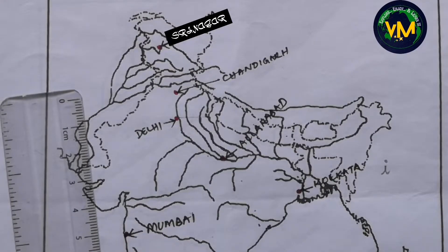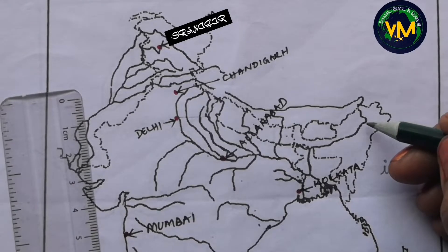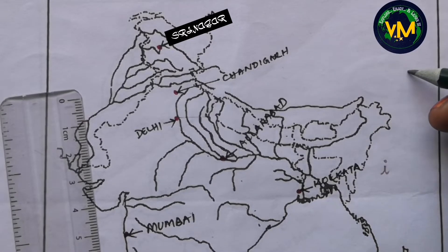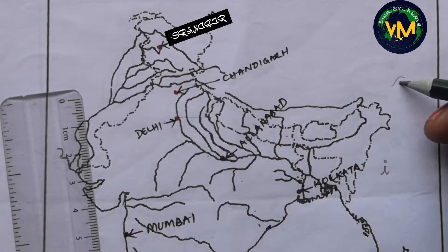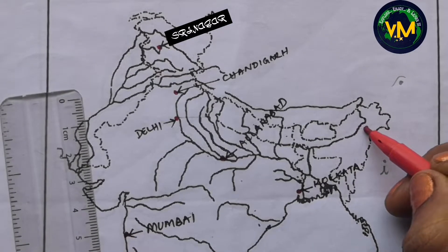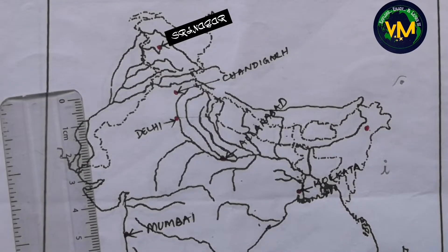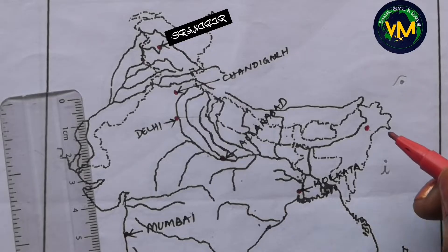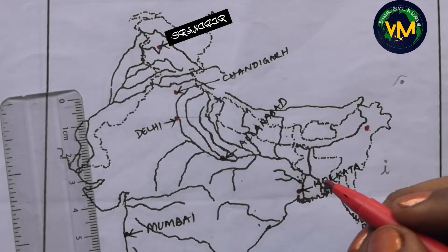Now coming to the minerals. First we have the oldest oil field in India, which is Digboi. For drawing Digboi, can you imagine an eyebrow? We usually draw an eyebrow for a doll like this. So just like that, imagine this as the eyebrow and this as the eye — this is Digboi. This is the oldest oil field as well as an onshore oil field.